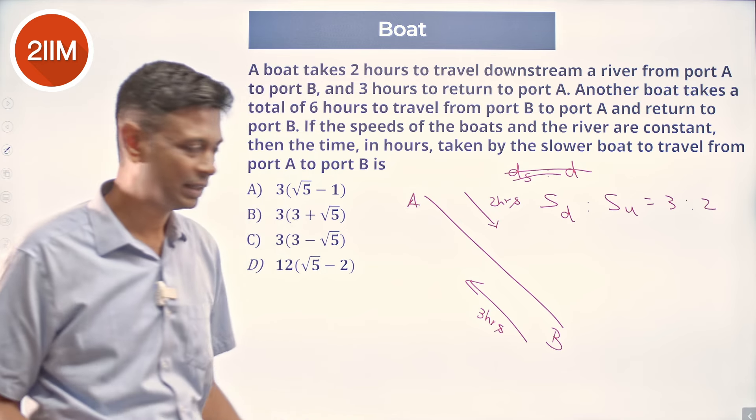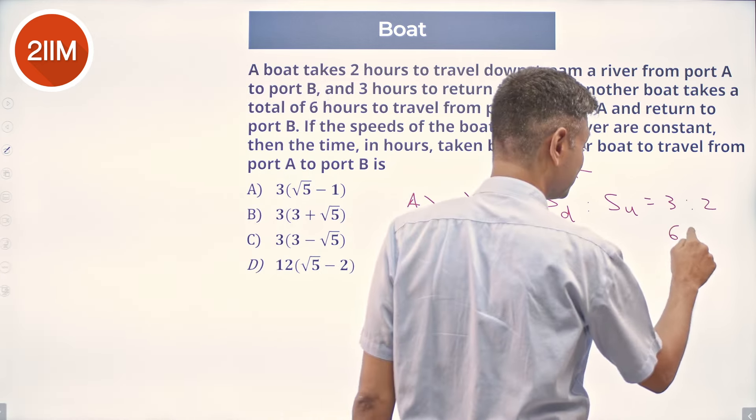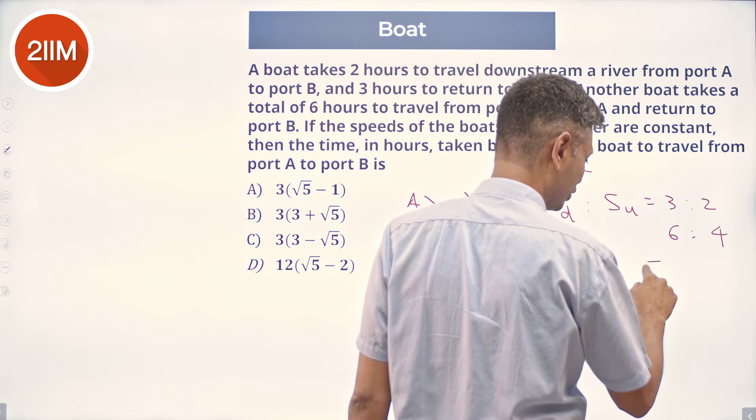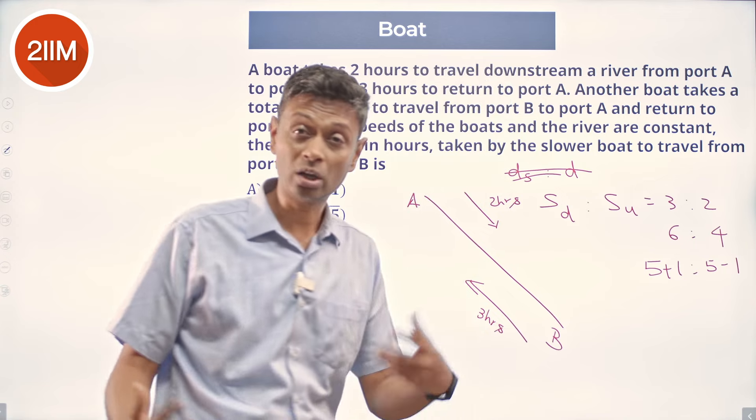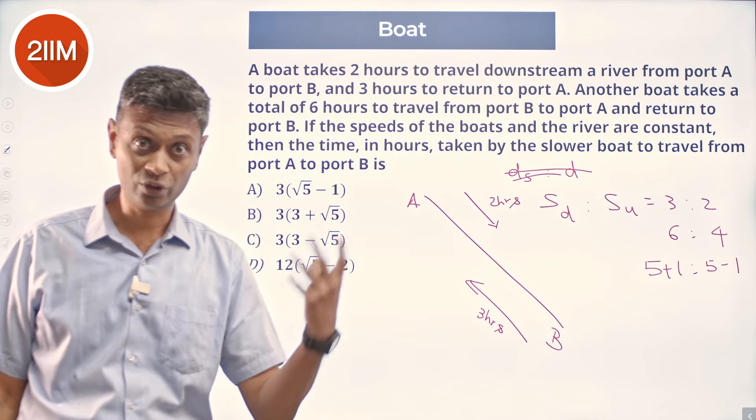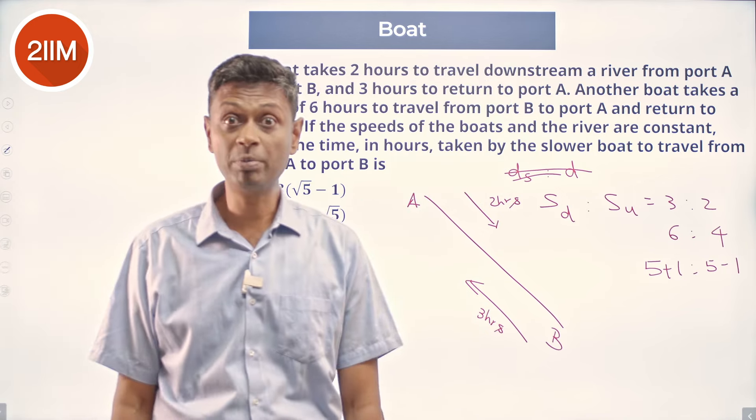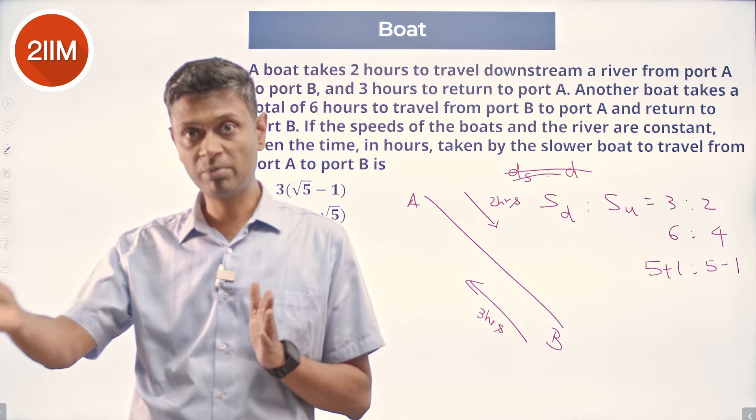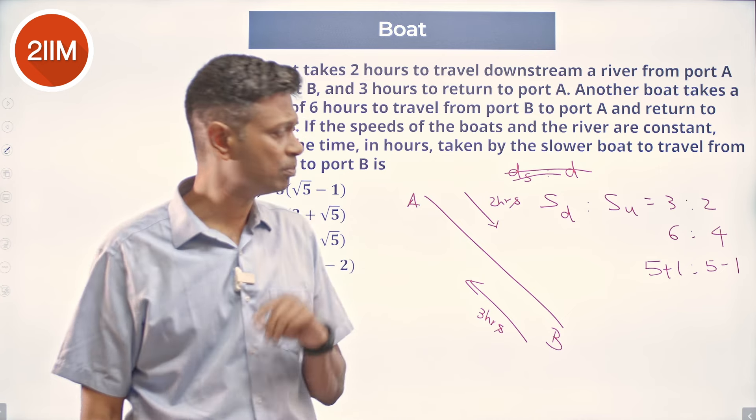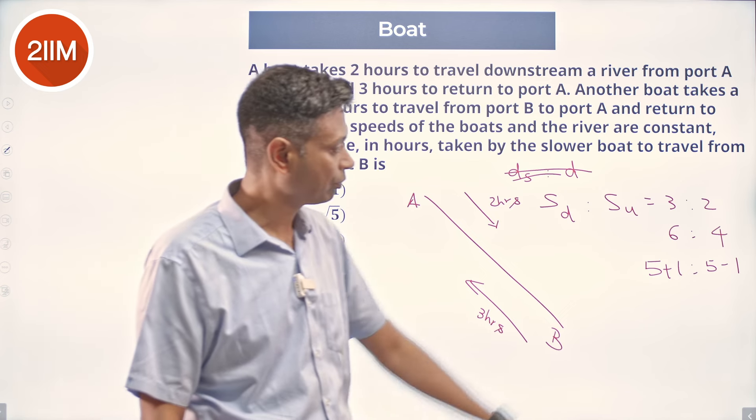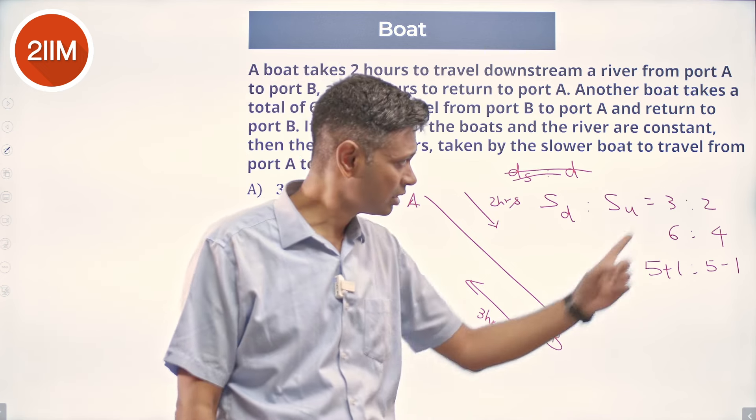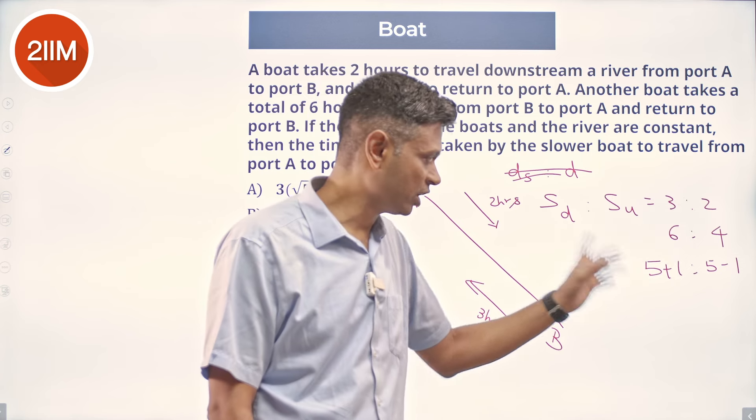I can imagine three is to two as six is to four. Then I can think of this as 5 plus 1 is to 5 minus 1. We know downstream speed is boat speed plus stream speed. Upstream speed is boat stream minus stream speed. So, B plus S is 6, B minus S is 4 or boat stream is 5.